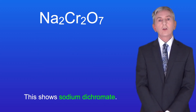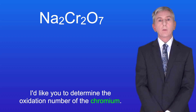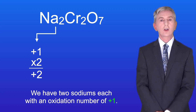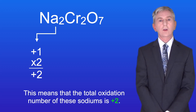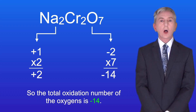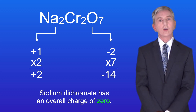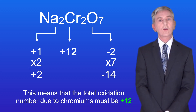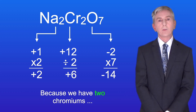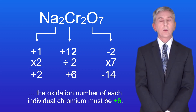Here's another one for you. This shows sodium dichromate. I'd like you to determine the oxidation number of the chromium — pause the video now and try this yourself. We've got two sodiums each with an oxidation number of plus one, so the total oxidation number of the sodiums is plus two. We've got seven oxygens each with an oxidation number of minus two, so the total oxidation number of the oxygens is minus fourteen. Sodium dichromate has an overall charge of zero, meaning the total oxidation number due to the chromiums must be plus twelve. Because we've got two chromiums, the oxidation number of each individual chromium must be plus six.